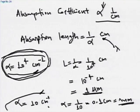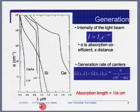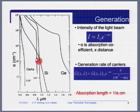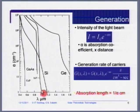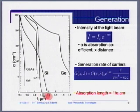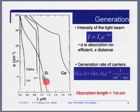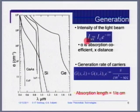Coming back to the absorption coefficient graph: look at silicon. The silicon absorption coefficient falls very sharply near the band gap. Near the band gap, at about 1.1 eV, absorption coefficient is very small, and therefore very thick material is required for silicon. If we do not use that thick material, we lose some part of the spectrum because it is not getting absorbed. Alpha is the absorption coefficient and this is the generation rate.